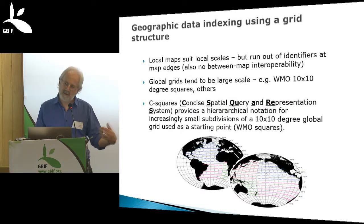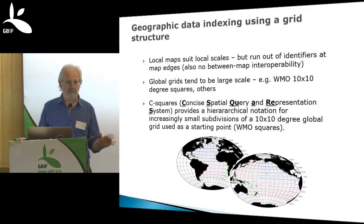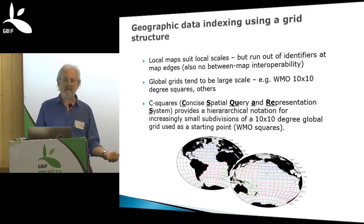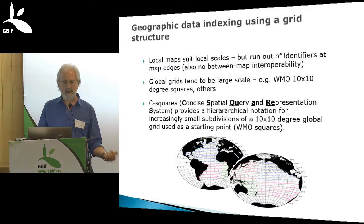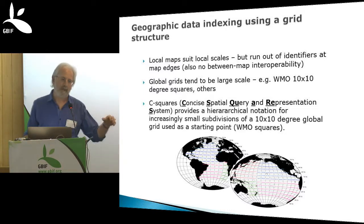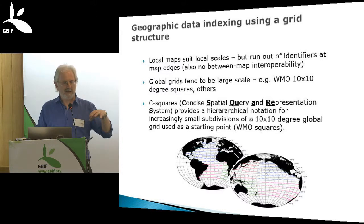Local maps all use their own numbering system, and data off the edge of the map can't be indexed. So there are problems with small-scale maps if you try to enlarge them to cover the whole Earth. On the other hand, some global indexes exist — like the World Meteorological Organization's WMO grid squares of 10 by 10 degrees, which is 1,000 kilometers. It's a good search and retrieval system, but it doesn't scale down to the smaller scale that biology may want.